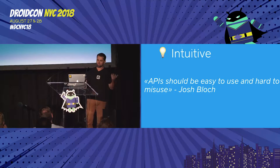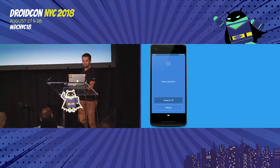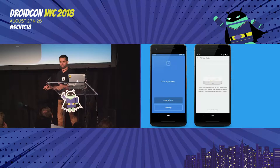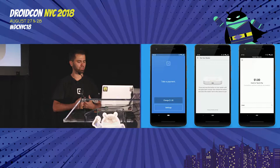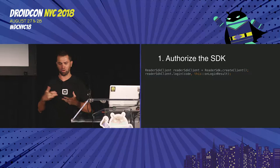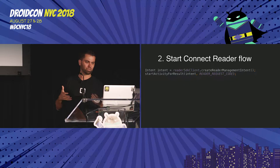Looking at the SDK, we have three parts. First, you need to authorize the SDK — it's an asynchronous call that will succeed or fail. Second, you start a UI flow to connect the reader; you don't have direct access to APIs connecting to the reader. Third, you start a payment flow and get a result. The API is pretty simple: you obtain a client from a static method, call login on it with a code and callback, and that's how you authorize.